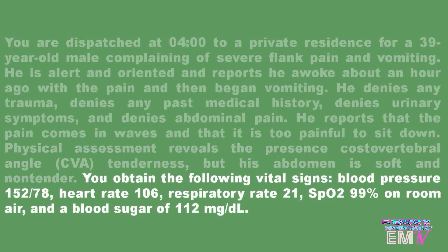Physical assessment reveals the presence of costovertebral angle tenderness, or CVA tenderness, but his abdomen is soft and non-tender. You obtain the following vital signs: blood pressure 152 over 78, heart rate 106, respiratory rate 21, SpO2 99% on room air, and a blood sugar of 112.